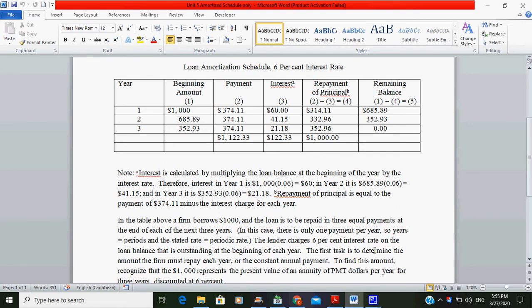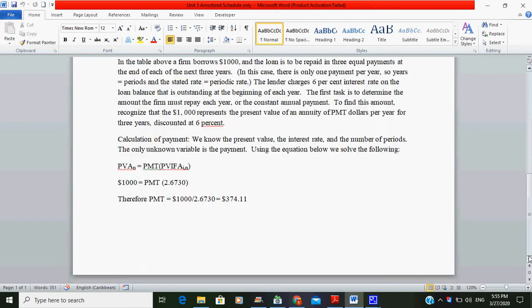The loan balance that is outstanding at the beginning of each year—the first task is to determine the amount the firm must repay each year, or the constant annual payment. To find this amount, recognize that the $1,000 represents the present value of an annuity of payment dollars per year for three years, discounted at 6%.